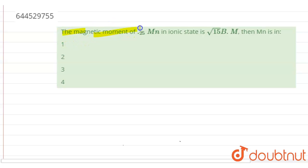The question given here is: the magnetic moment of manganese in ionic state is √15 BM. Then we have to calculate the oxidation state of manganese. Now for solving this question, we are given that magnetic moment value...